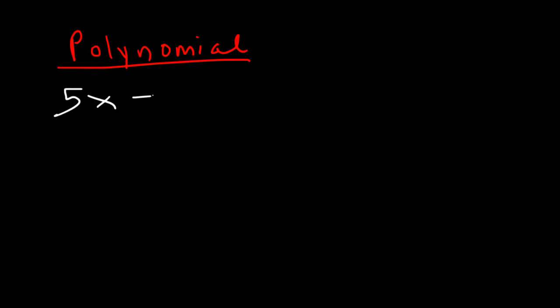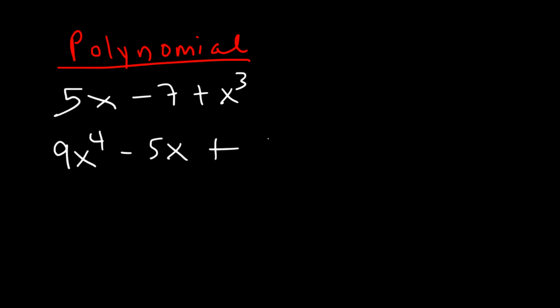5x minus 7 plus x cubed — that's a polynomial. It's also a trinomial, but it can be classified as a polynomial. 9x to the fourth minus 5x plus 6x squared minus 7 — that's a polynomial. It has many terms.